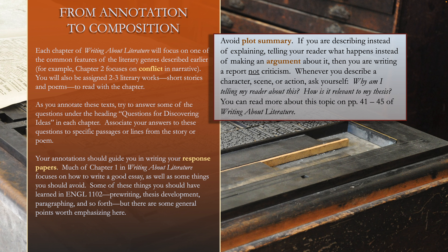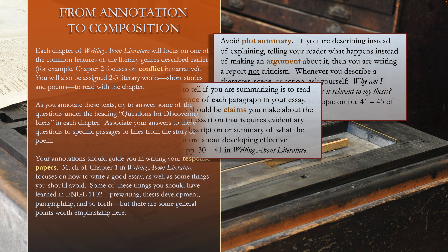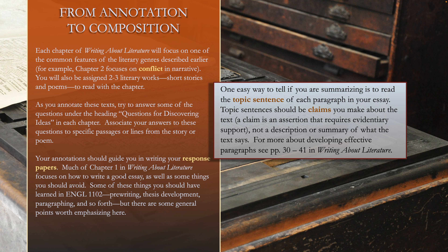You can read more about this topic on pages 41 to 45 of Writing About Literature. One easy way to tell if you are summarizing is to read the topic sentence of each paragraph in your essay. Topic sentences should be claims you make about the text. A claim is an assertion that requires evidentiary support, not a description or summary of what the text says. For more about developing effective paragraphs, see pages 30 to 41 in Writing About Literature.